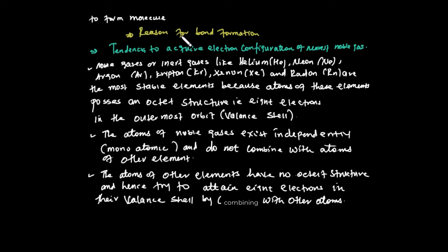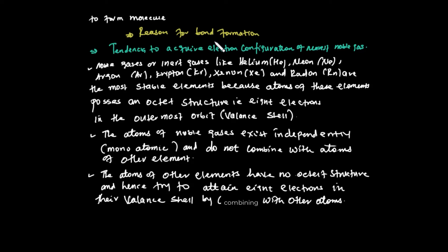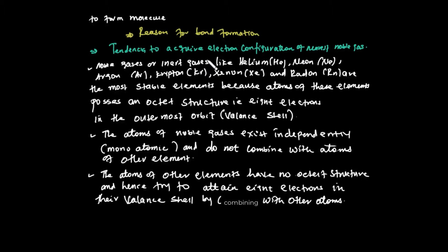Now, the reason for bond formation. Why do atoms form a chemical bond? Atoms either lose electrons, gain electrons, or form a chemical bond by sharing their valence electrons — their outermost shell electrons. What is the reason? The first reason is the tendency to acquire the electron configuration of the nearest noble gas — to attain the nearest noble gas electron configuration.